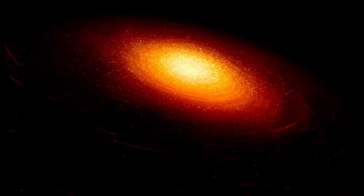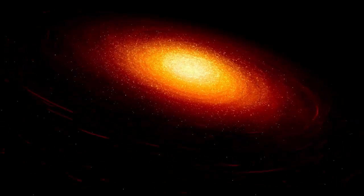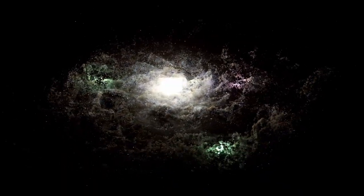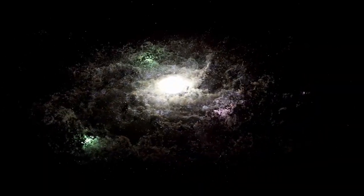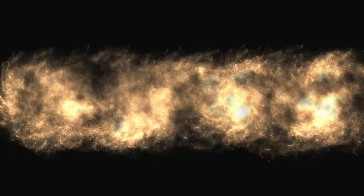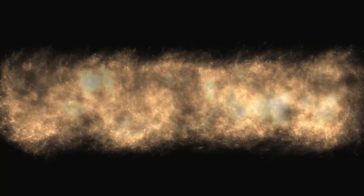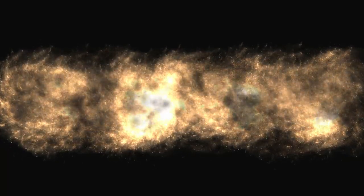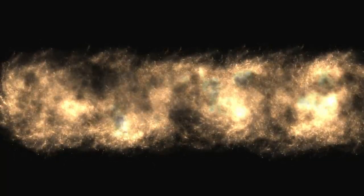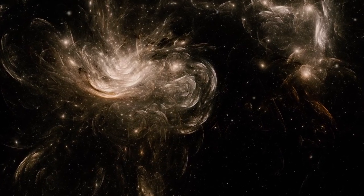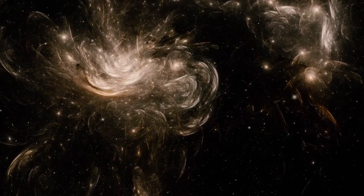But all of that—the maps, the models, the equations—is now in question. The James Webb Space Telescope, the most advanced observatory ever launched, was designed to look farther into the cosmos than any instrument before it. With its infrared vision, it can peer back in time, capturing light that has traveled for billions of years. What it was meant to reveal were the early stages of galaxy formation, the building blocks of the modern universe. But what it actually found was something else entirely.